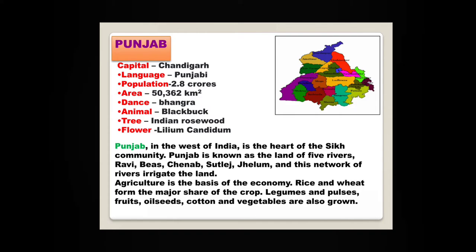Punjab, in the west of India, is the heart of the Sikh community. Punjab is known as the land of five rivers — Ravi, Beas, Chenab, Sutlej and Jhelum — and this network of rivers irrigates the land. Agriculture is the basis of the economy. Rice and wheat form the major share of the crop. Legumes and pulses, fruits, oilseeds, cotton and vegetables are also grown here.